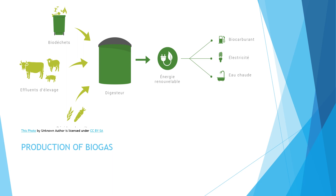This picture shows the production of biogas. Cow dung and agricultural waste are put into the digester and then converted into energy, which can be used as biofuel, electricity, and many more types.